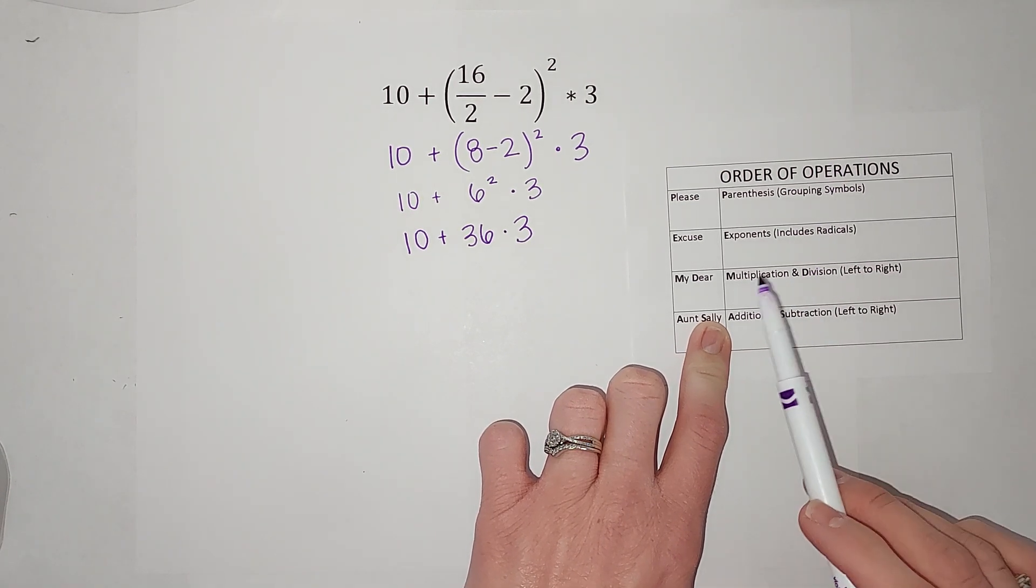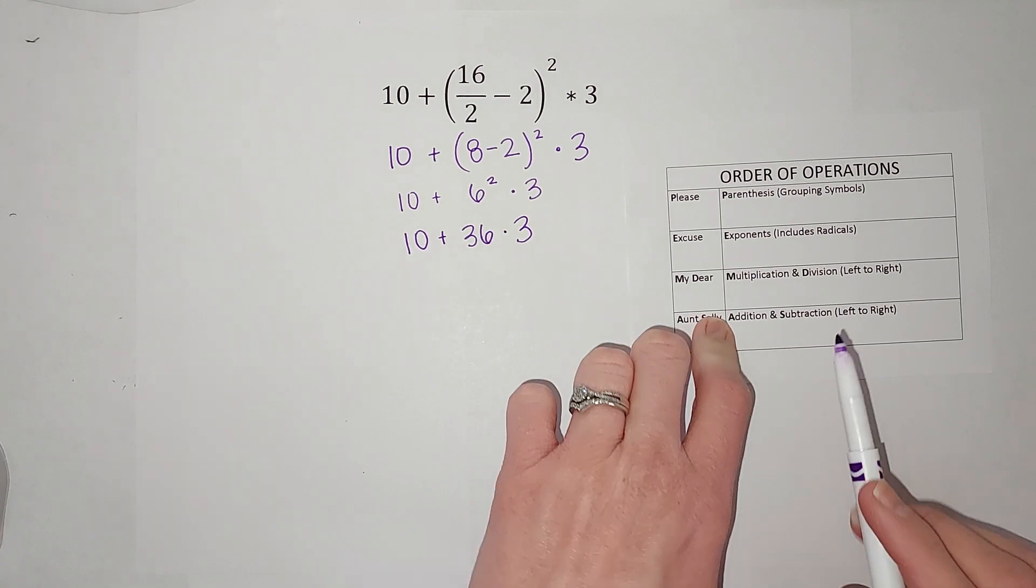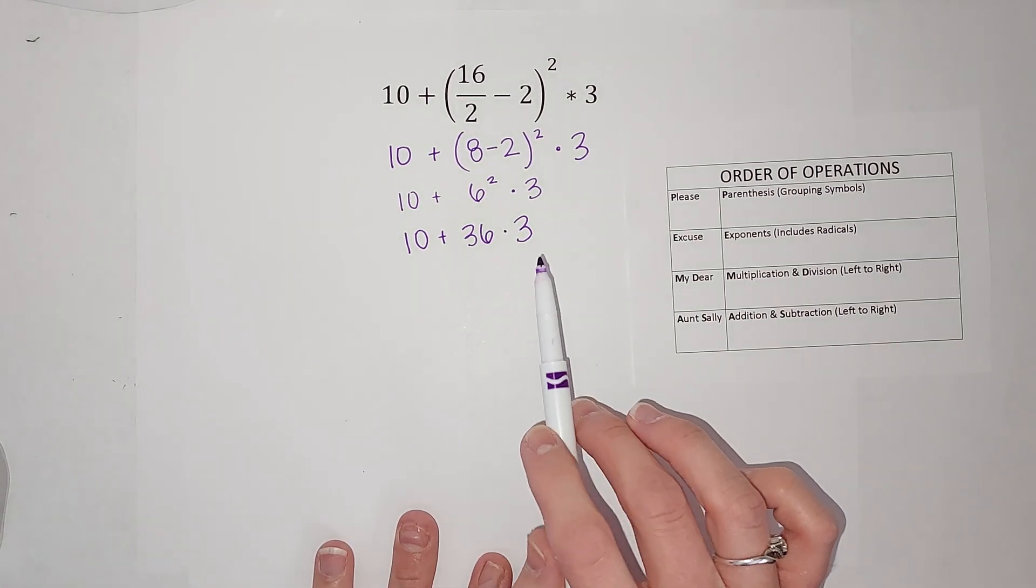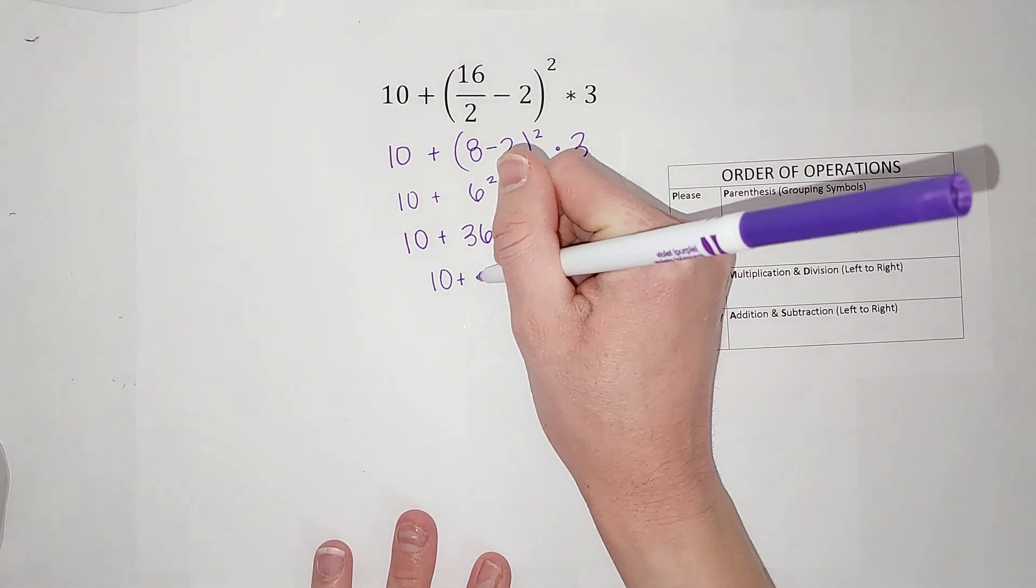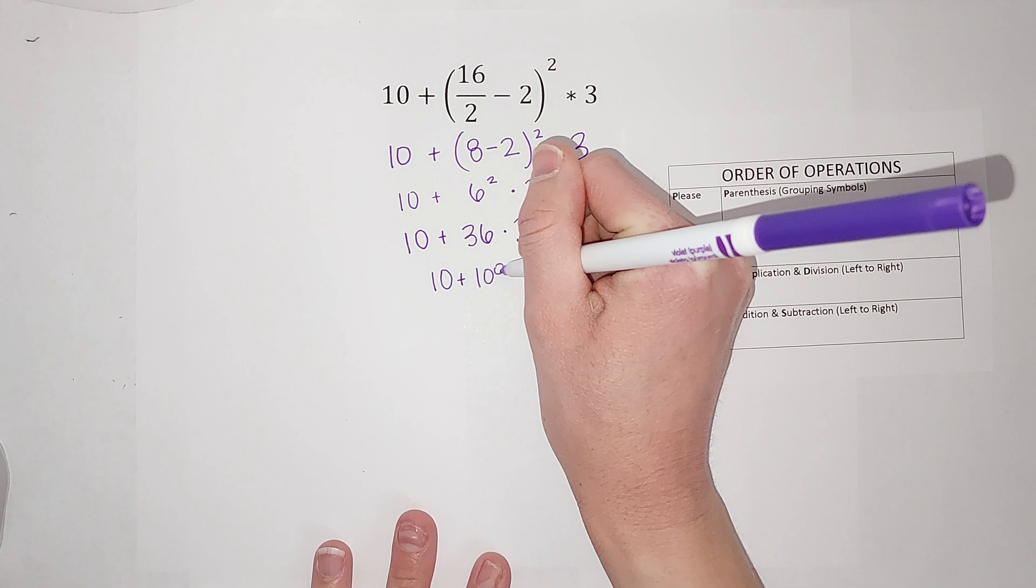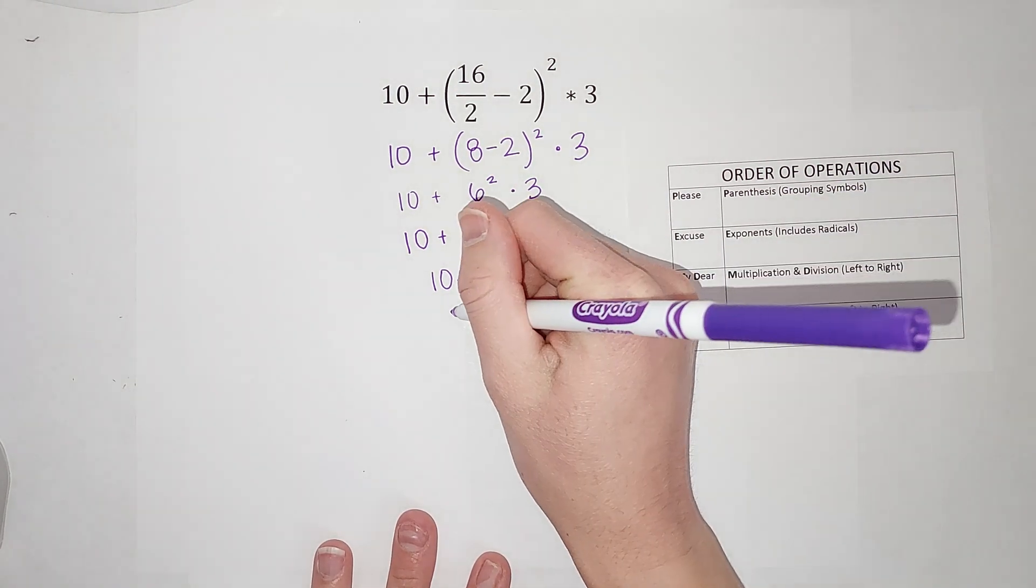So we're going to do 36 times 3 first. I'm going to get 10 plus 36 times 3, which is 108. And then I'm going to add those, so I get 118... 119. There's my answer.